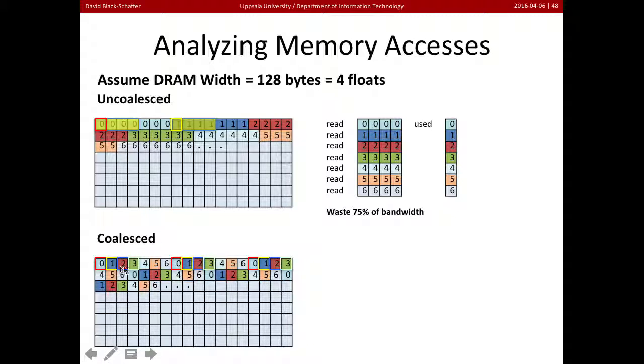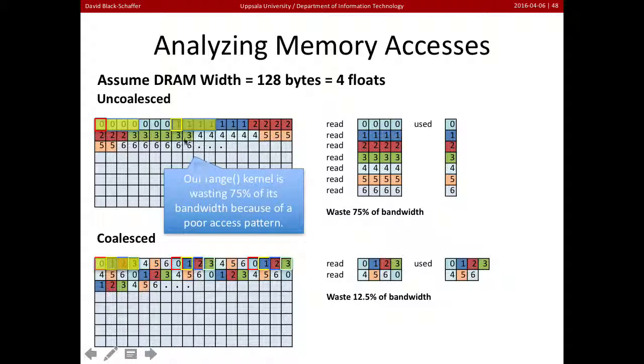So what we get is this pattern. In the first iteration threads zero, one, two and three are all going to read from the same chunk of data from DRAM. And the next iteration they read from the next one. So now we read zero, one, two, three and we use those values but we're using them across different threads all at the same time. And as a result we waste much less of the bandwidth. So the range kernel that we have right now is wasting a huge amount of its bandwidth because of the poor access pattern. Let's fix that and see what happens.